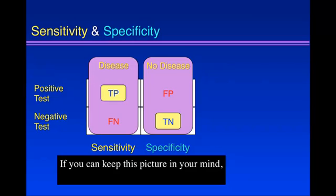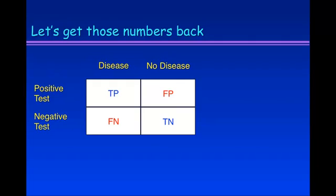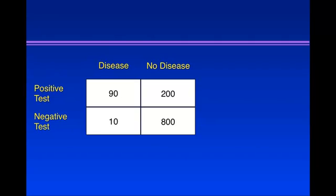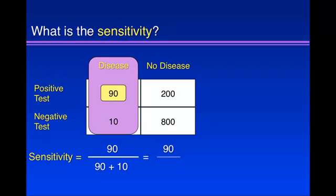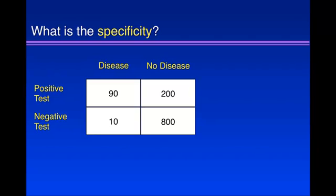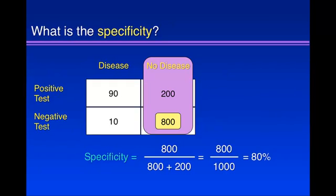If you can keep this picture in your mind, you don't need to remember the algebra. Let's try it out with the numbers back in. What's the sensitivity? It's about these people over here — that's the denominator. How often is the test right in that group? Ninety times out of a hundred — that's ninety percent. What's the specificity? That's about these people over here as the denominator. How often is the test right? Eight hundred over a thousand, or eighty percent. The numbers might be a little less round, but it's not that hard.